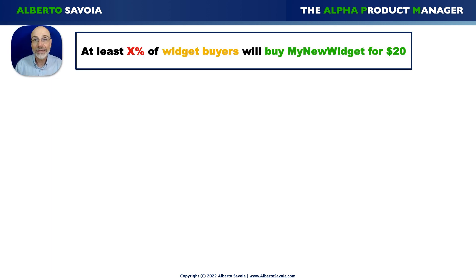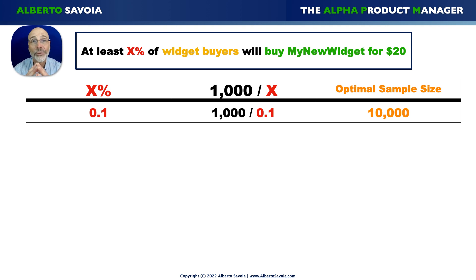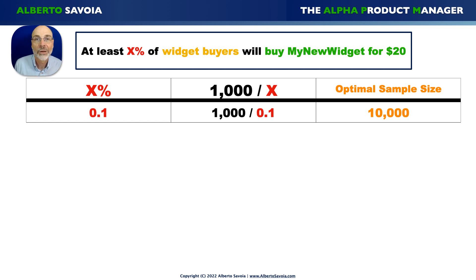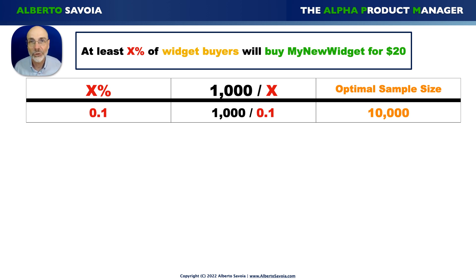Now let's look at how your sample size varies depending on what your X percent is. I've created a table for you. If your X percent is 0.1% — say you have a very exclusive product that very few people will buy, like a Rolls-Royce SUV targeting multi-millionaires — then you still need a very large sample size of 10,000, because 0.1% means you need to reach a lot of people to observe enough buyers. The smaller your X percent, the bigger your required sample size. If your X percent is 1%, take 1,000 divided by 1, you get 1,000, meaning you need experiments with about 1,000 people, because 1% of a population means on average 100 people per buyer, and one buyer is not enough.